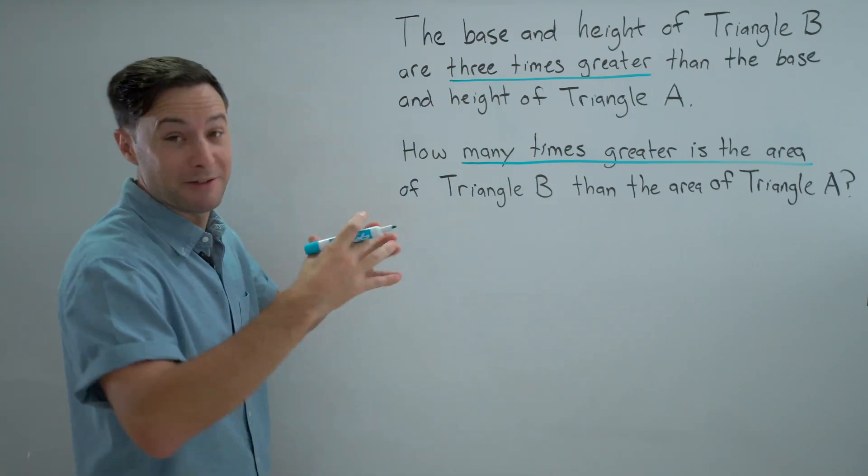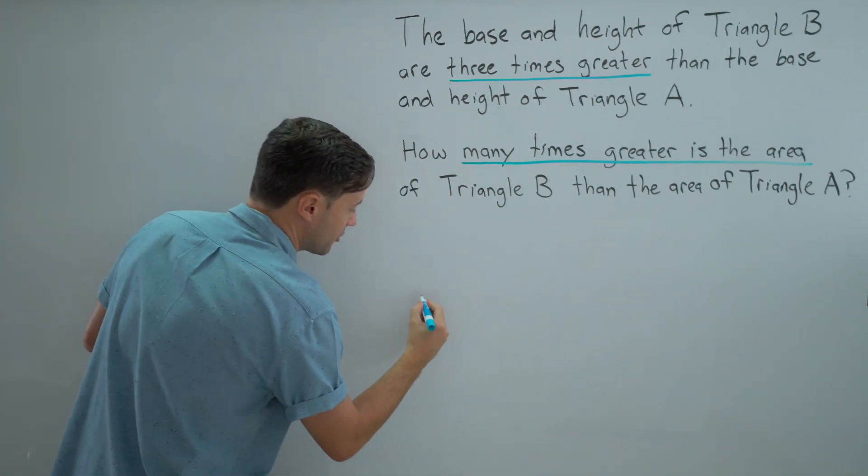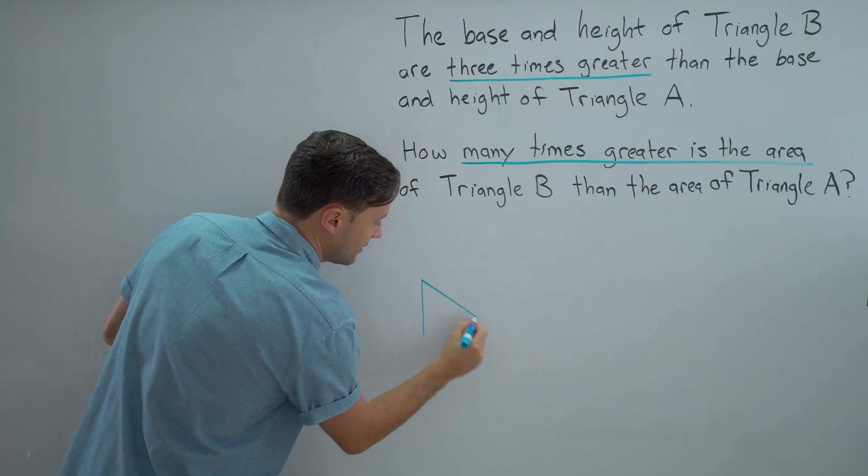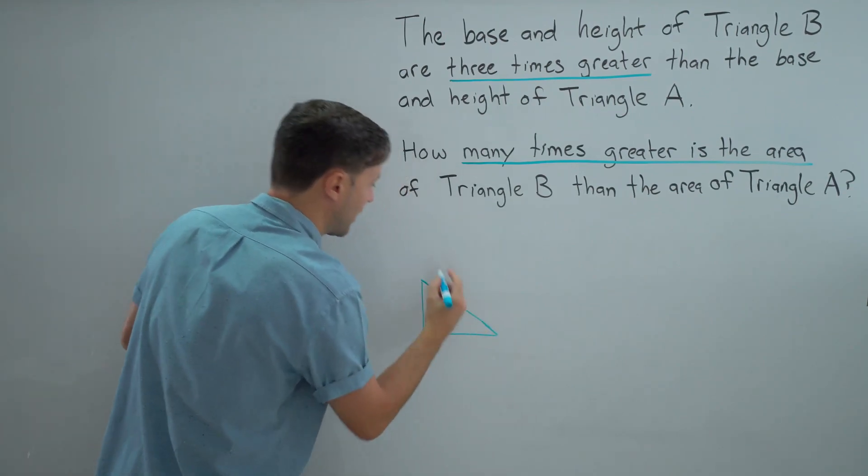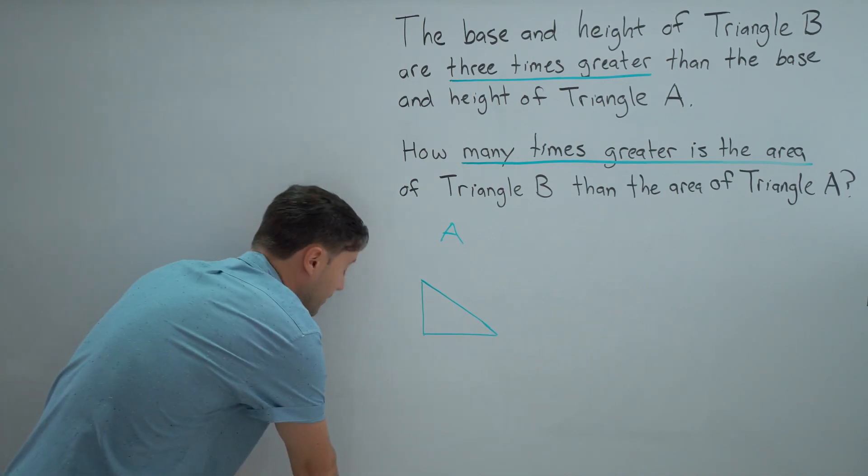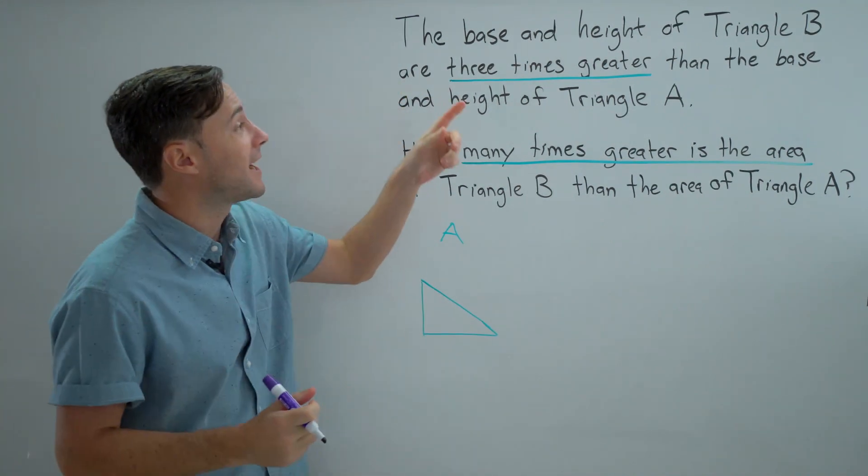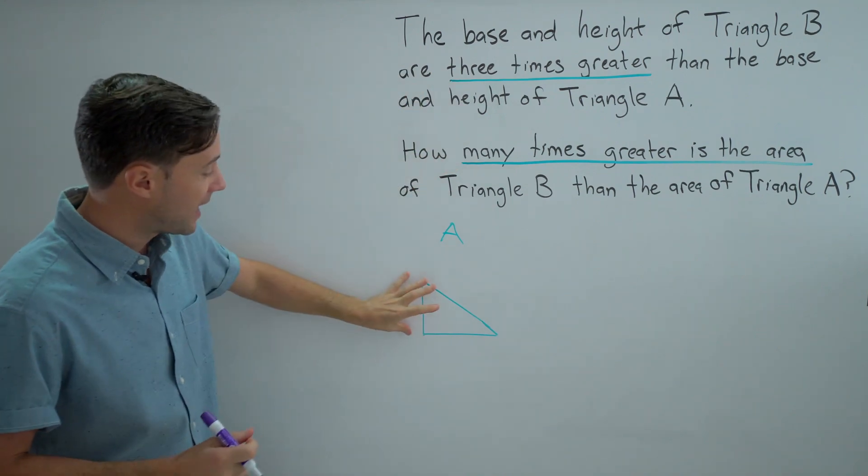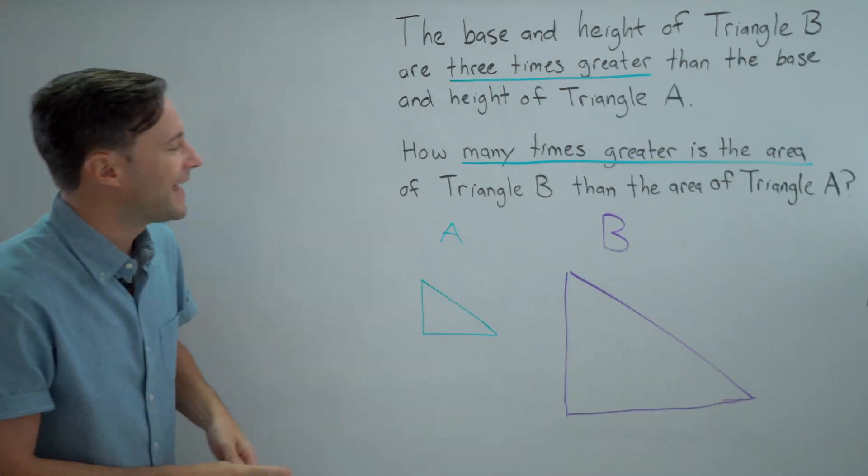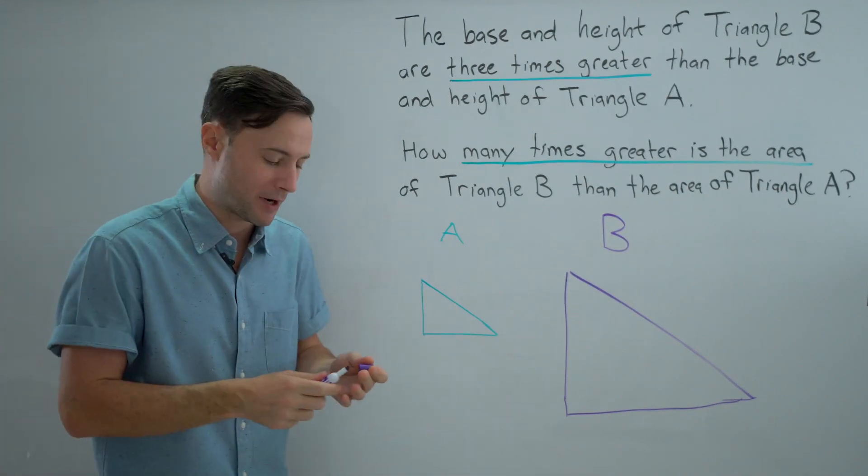I know triangle B is going to be greater, bigger than triangle A. So I'm going to first just draw a little triangle A. And then for B, let's use a different color. Let's make it quite a bit bigger, right? Because we know the base and the height of triangle B are three times that of A. So there's B, there's A. They don't have to be perfect. It's just a picture just to help us understand the problem.